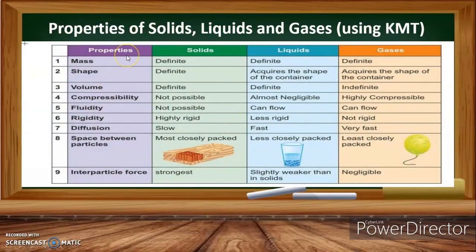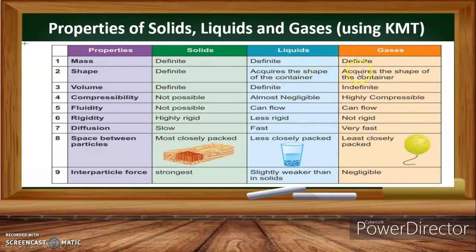The different properties we will compare include mass, shape, volume, compressibility, fluidity, rigidity, diffusion, space between particles, and inter-particle force. For solids, there is a definite shape, mass, and volume. For liquids, there is a definite mass and volume, but the shape acquires the shape of the container. For gases, there is a definite mass, the shape acquires the container, and the volume is indefinite.